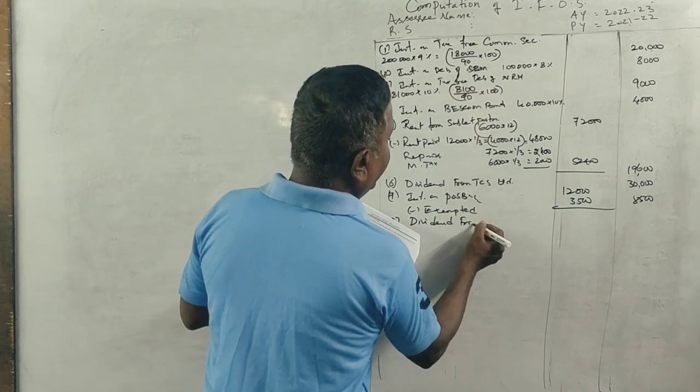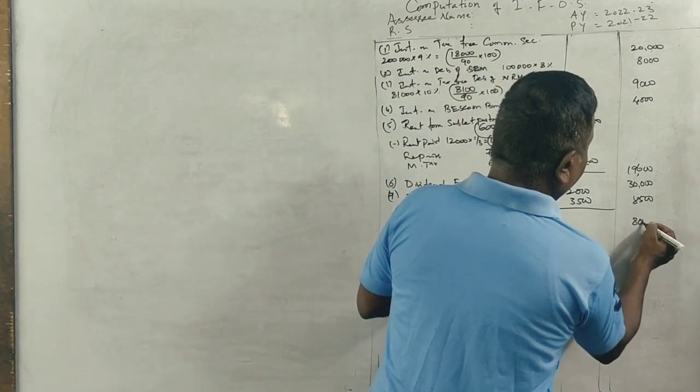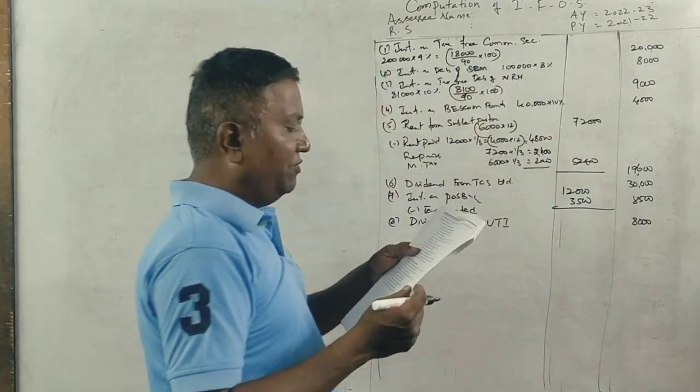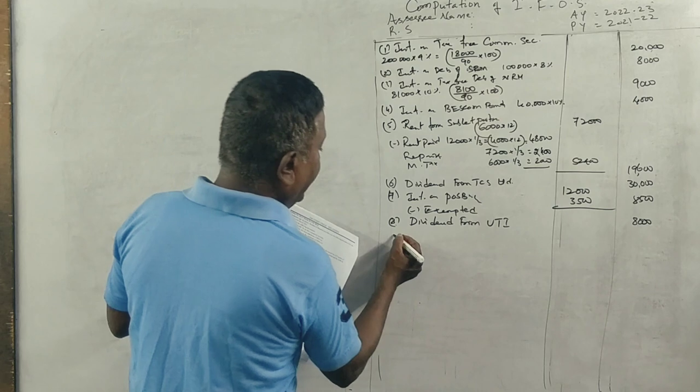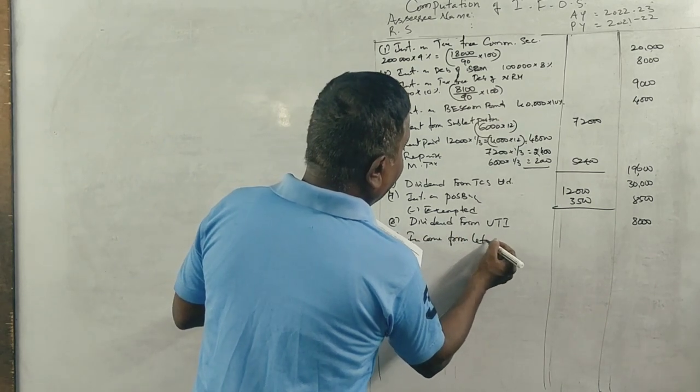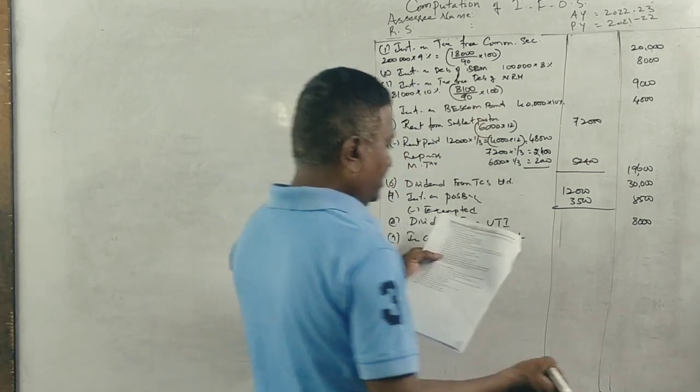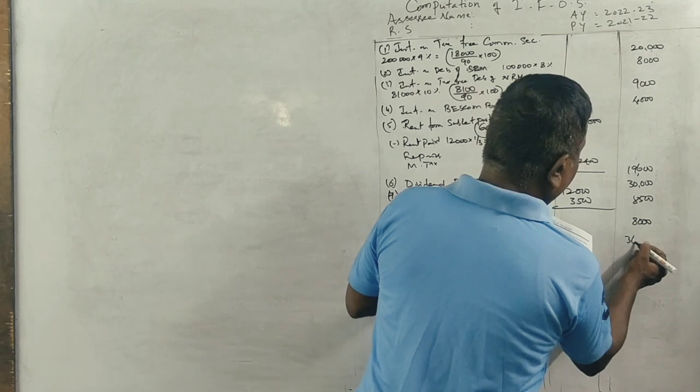Next, received dividend from UTI, 8,000, which is fully taxable. Income from letting out plot is 36,000.